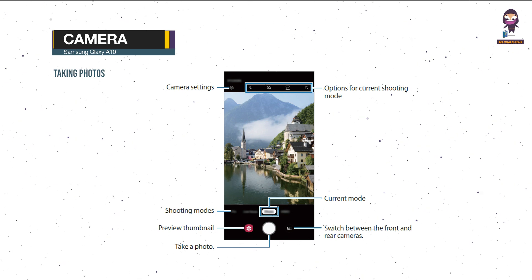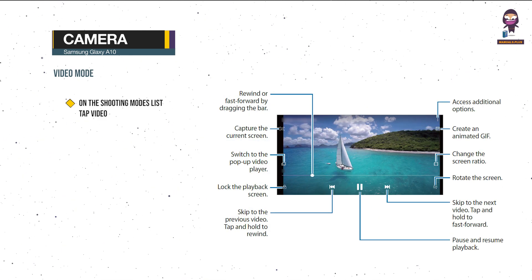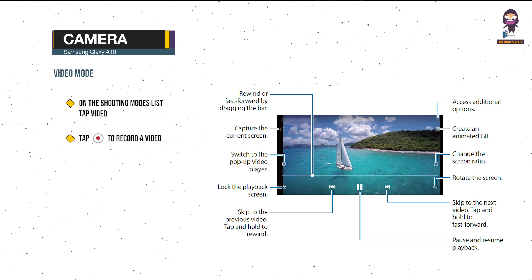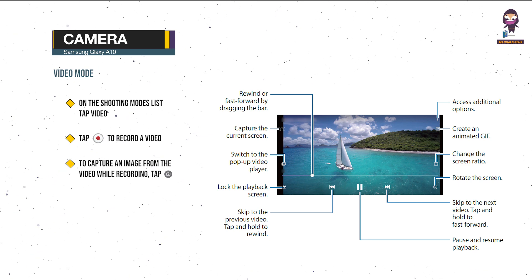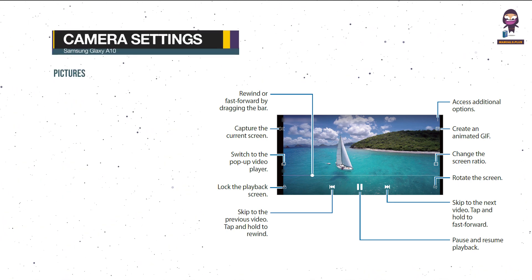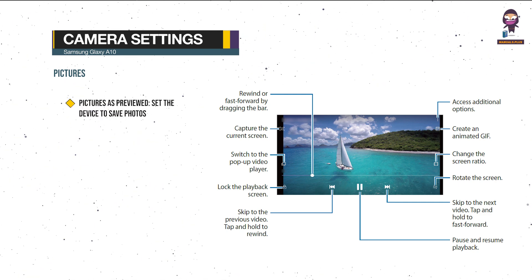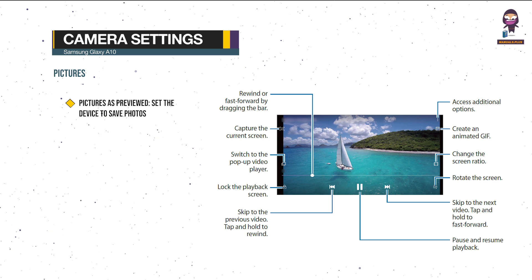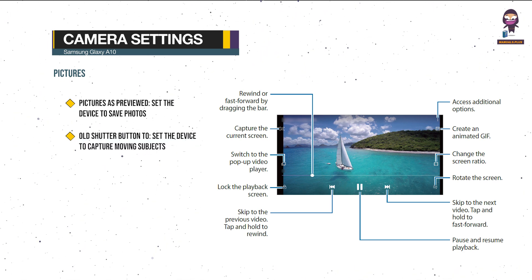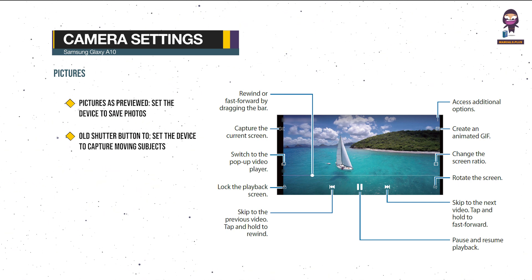Camera — Taking Photos. Video Mode: on the Shooting Modes list, tap Video. Tap to record a video. To capture an image from the video while recording, tap the capture button. Tap to stop recording the video. Camera Settings — Pictures as Previewed: set the device to save photos as they appear on the preview screen when taken with the front camera without flipping them. Hold Shutter Button: set the device to capture moving subjects in a series of photos when you tap and hold the camera button.